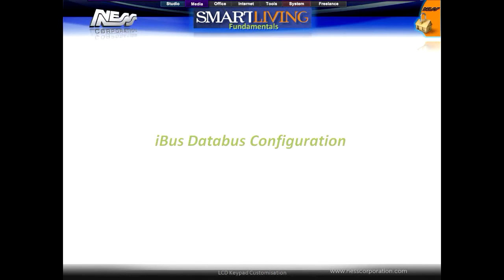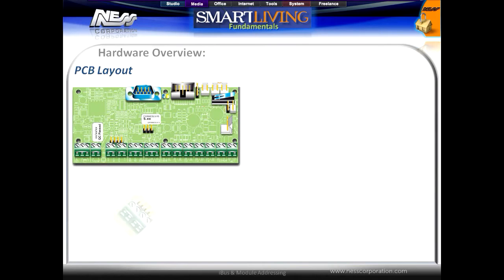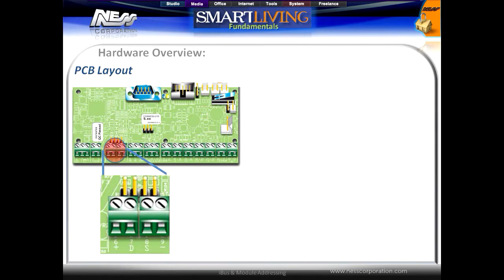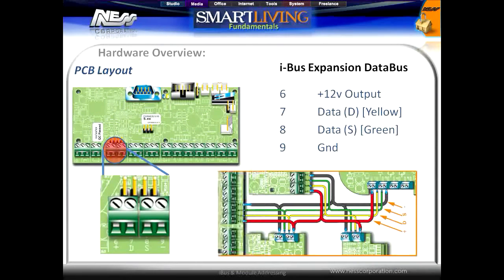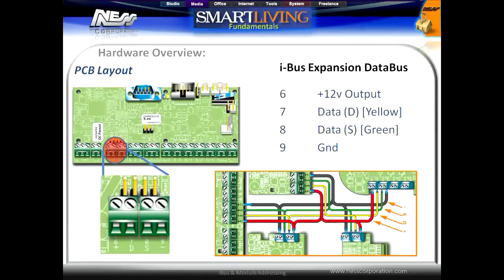Looking at the data bus configuration and wiring, the data bus is a four-wire proprietary data bus that has plus and minus 12 volts and two data lines. All modules that need to be connected to the system — keypads, expander modules, GSM modules — simply connect to this four-wire data bus.